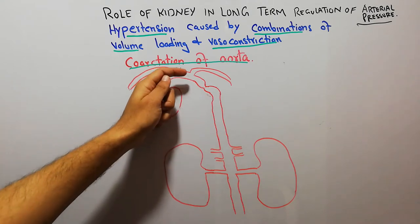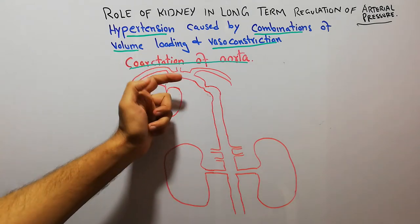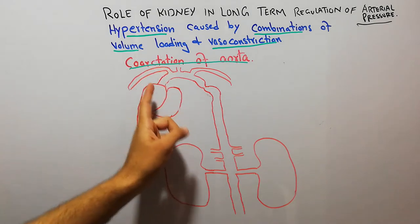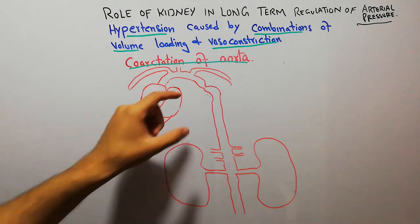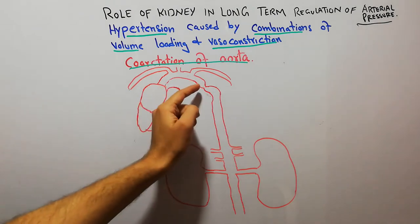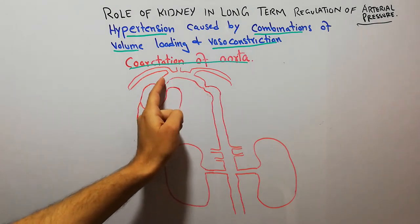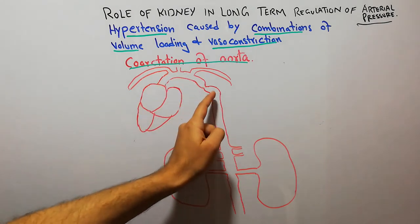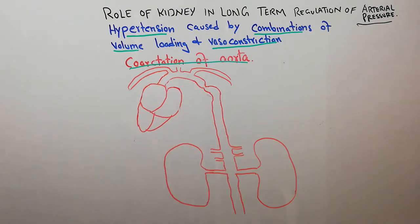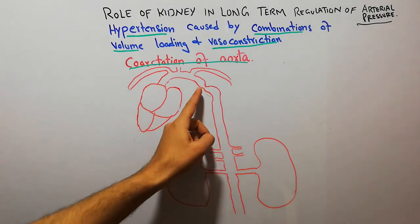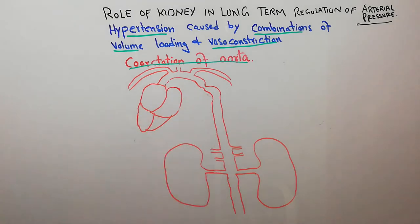We know that there is an arch in the aorta when it arises from the heart, and when there is narrowing it appears like two arcs. This is simply due to narrowing of the aorta.